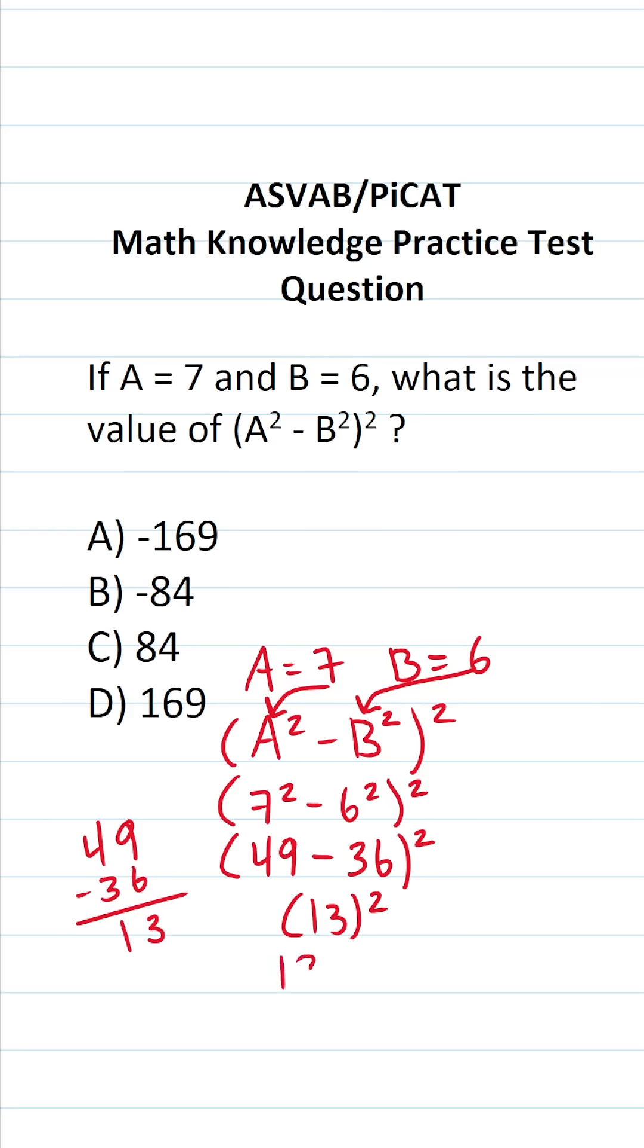13 squared is the same thing as 13 times 13. Again, if you can't do that mentally, do it off to the side. 3 times 3 is 9. 3 times 1 is 3. Before we start multiplication with this 1, bring in a 0 placeholder. 1 times 3 is 3. 1 times 1 is 1. Let's add this all up. This is going to be 9, 6, 1. So 13 times 13 is 169.